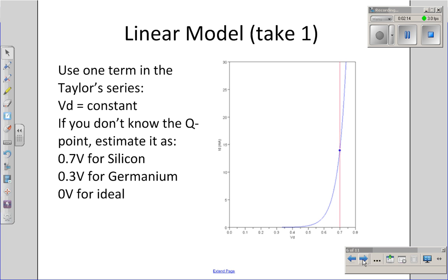Let's look at the simplest case — take the Taylor series expansion up to one term. In that case, the voltage is a constant: the Q point, or estimated Q point, of 0.7 volts. If the diode is turned on, the voltage drop across the diode is constant — V sub D — which is roughly 0.7 volts for silicon, 0.3 volts for germanium, and 0 volts for an ideal diode. If the diode is turned off, the current is zero, giving a piecewise linear model.